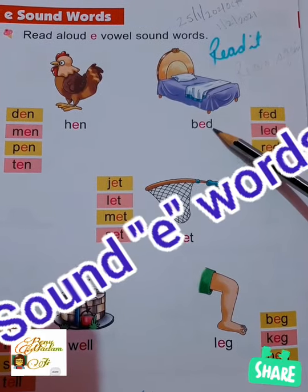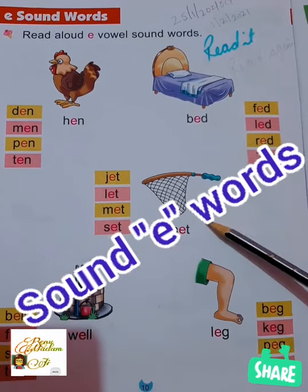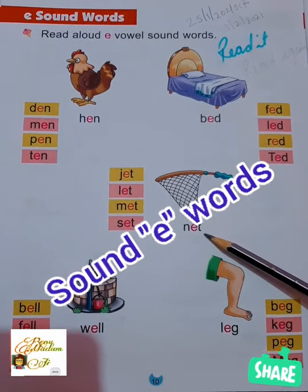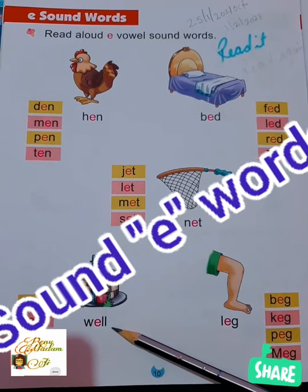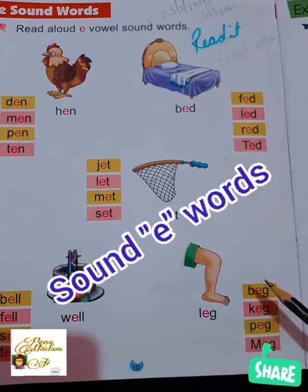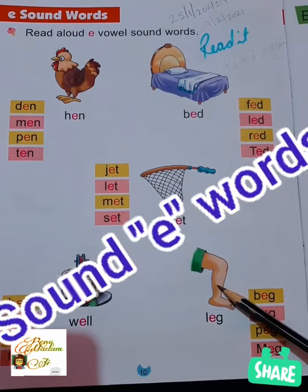B, E, D — bed. N, E, T — net. W, E, double L — well. And L, E, G — leg. Clear?